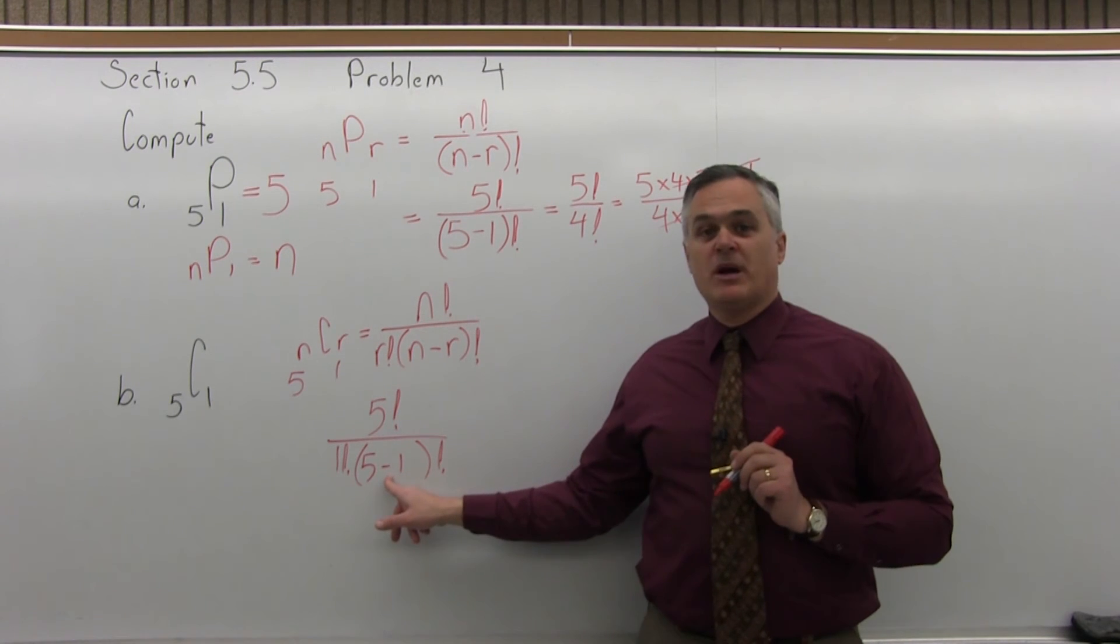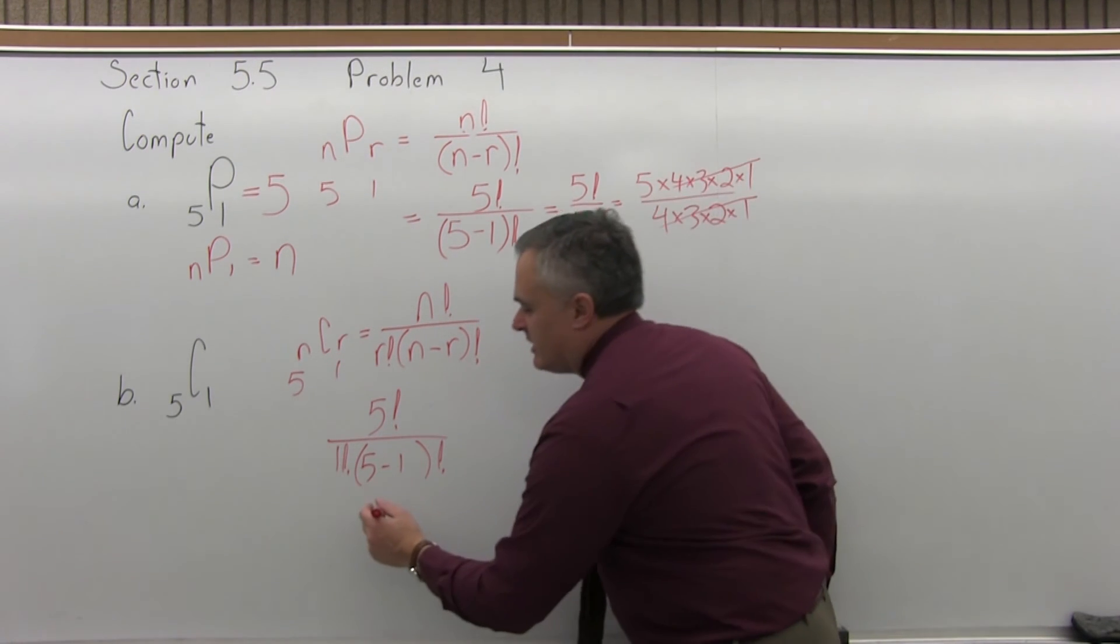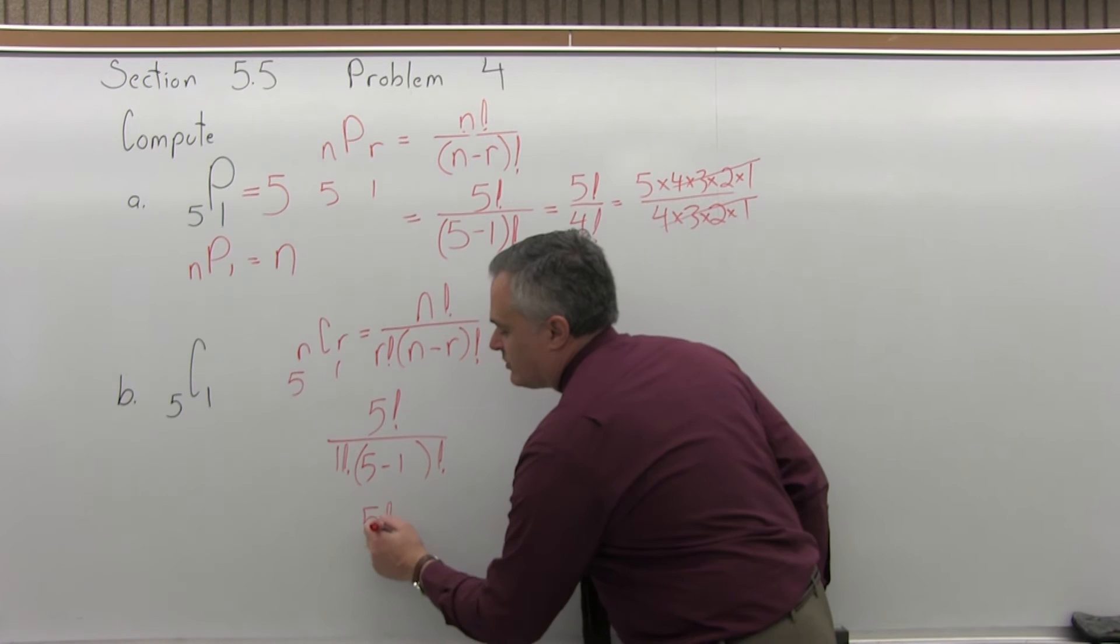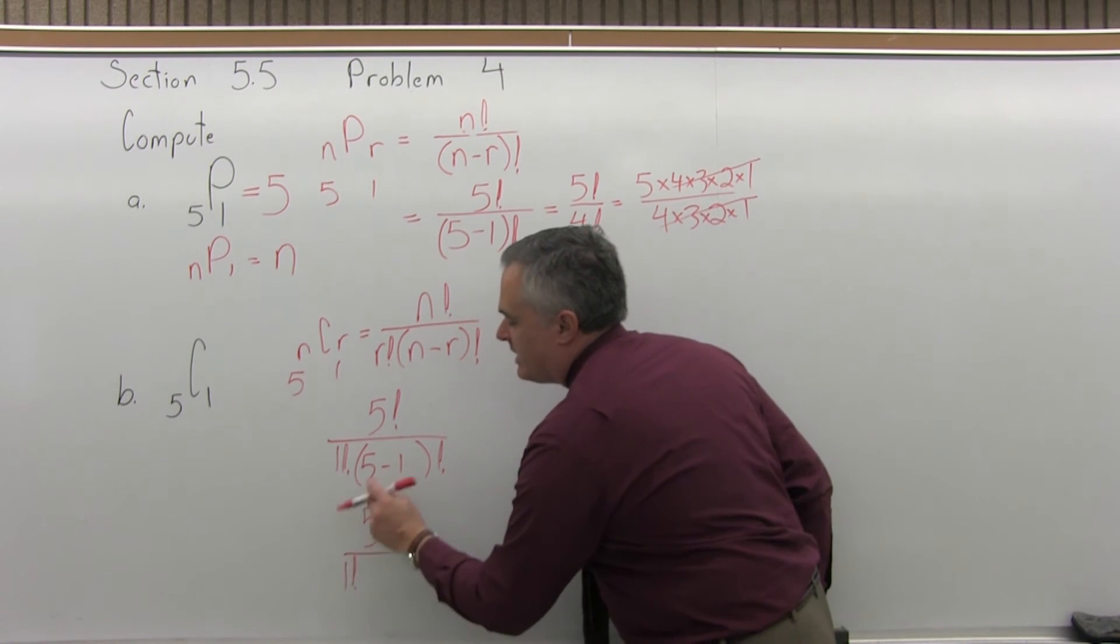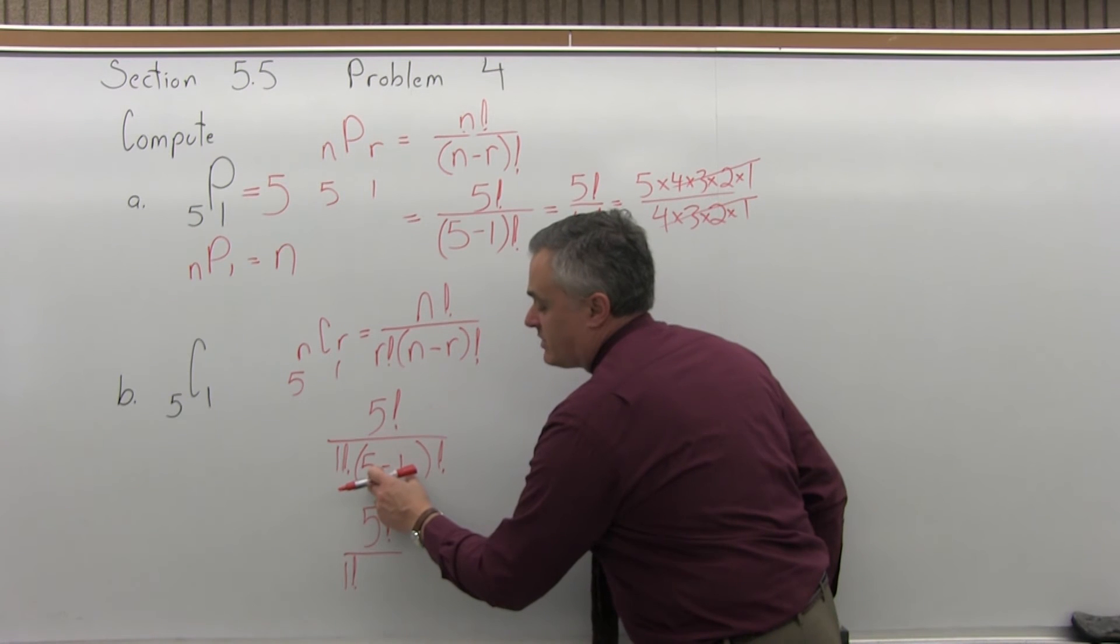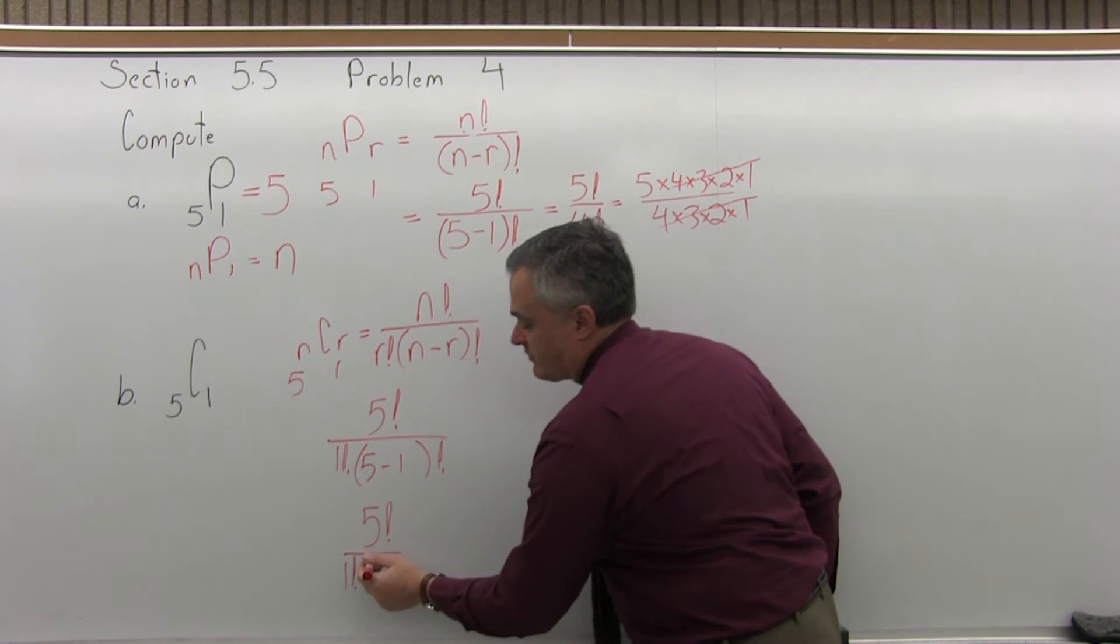So let me do my work in parentheses first. So the 5 factorial in the numerator will stay for a minute. The 1 factorial in the bottom will stay for a minute. The parentheses will get replaced with a 4 factorial. 5 minus 1 is 4. And we have the factorial.